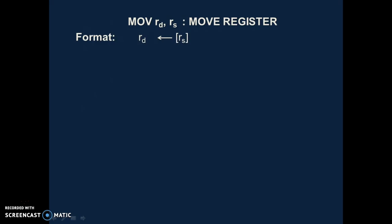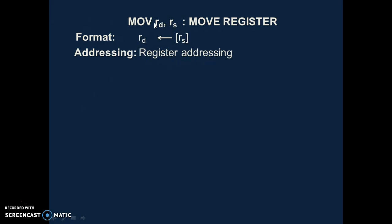Let's see what will be the format. In this instruction, we copy the content of the source register — the content of the source register gets copied to the destination register. The addressing mode is register addressing mode. Why? When the operand is a register, this instruction has two parts: before the arrow is the opcode and after the arrow is the operand. Since the operand is a register, the addressing mode is register addressing mode.